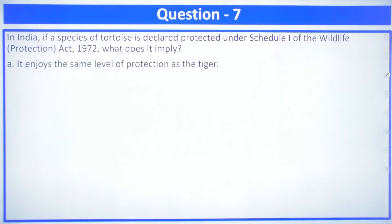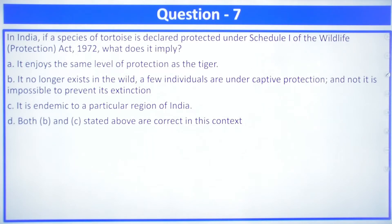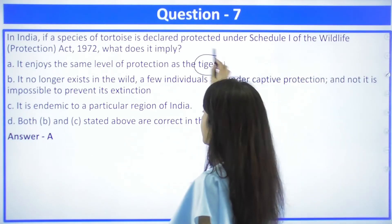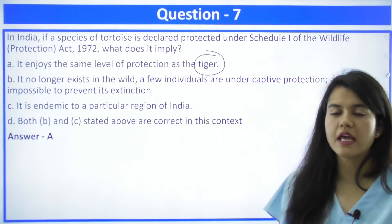Question number 7: in India, if a species of tortoise is declared protected under Schedule 1 of the Wildlife Protection Act of 1972, what does it imply? Options are: A — it enjoys the same level of protection as a tiger; B — it no longer exists in the wild and a few individuals are under captive protection; C — it is endemic to a particular region; D — both B and C are correct. The answer is A — it enjoys the same level of protection as a tiger, because the tiger is also in Schedule 1.